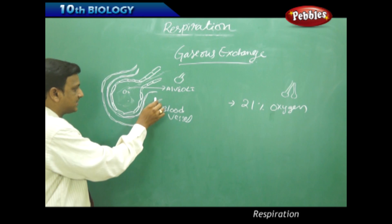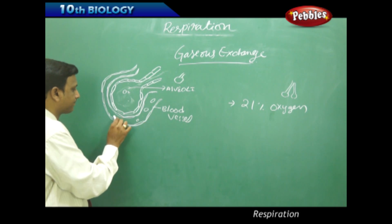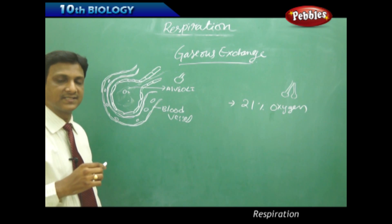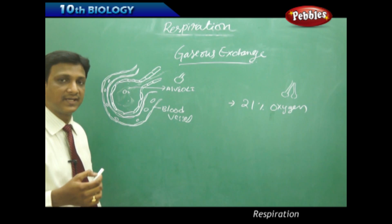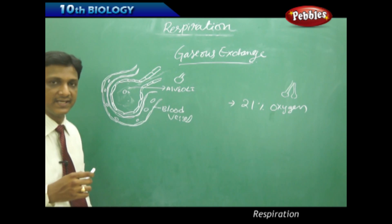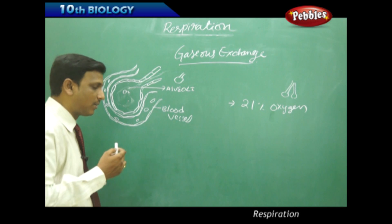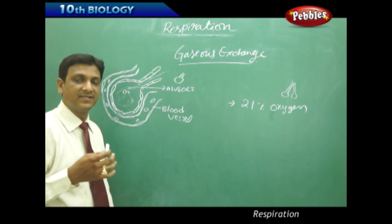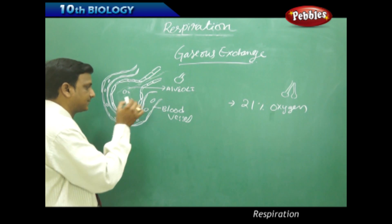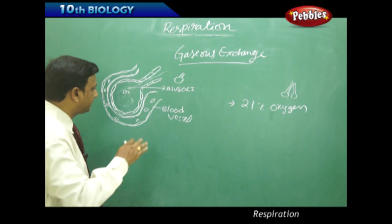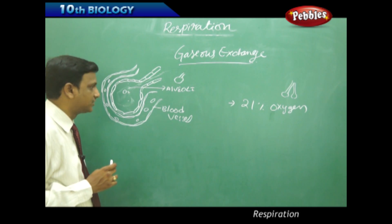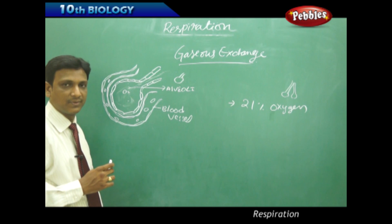In the blood vessel, red blood cells are present. These red blood cells carry carbon dioxide from the tissues and body to the lungs area. Some carbon dioxide comes in the form of carbonate mixed in the plasma, and some is carried by the blood vessels. Let us understand the concentrations of oxygen and carbon dioxide in both the blood vessel and alveoli.